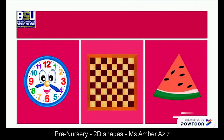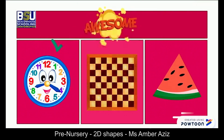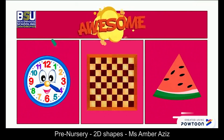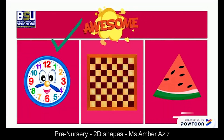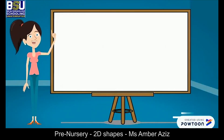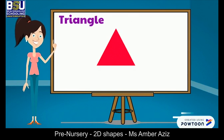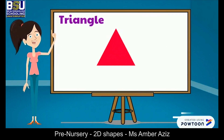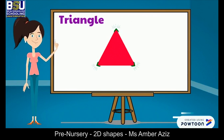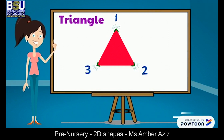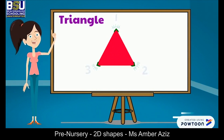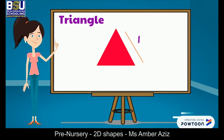Good job! Yes, this is a circle-shaped clock. Now, this is a triangle. It has three vertices and three sides. Let's count the vertices first: one, two, three. Very good. Now we will count the sides: one,